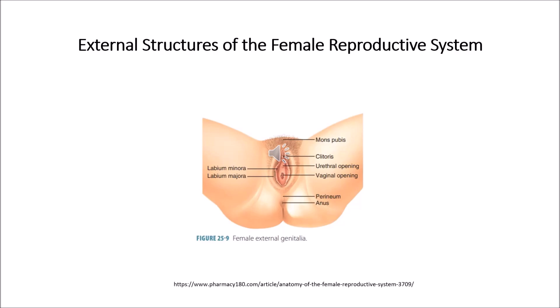The next part is the Bartholin glands. These glands are located next to the vaginal opening on each side and produce a fluid called mucus.